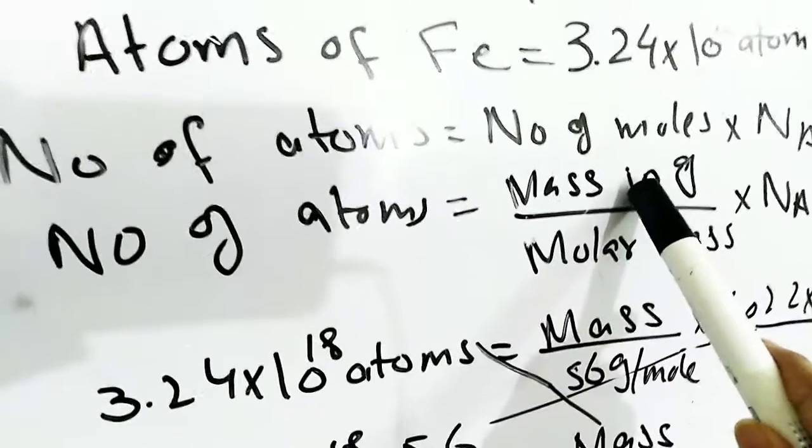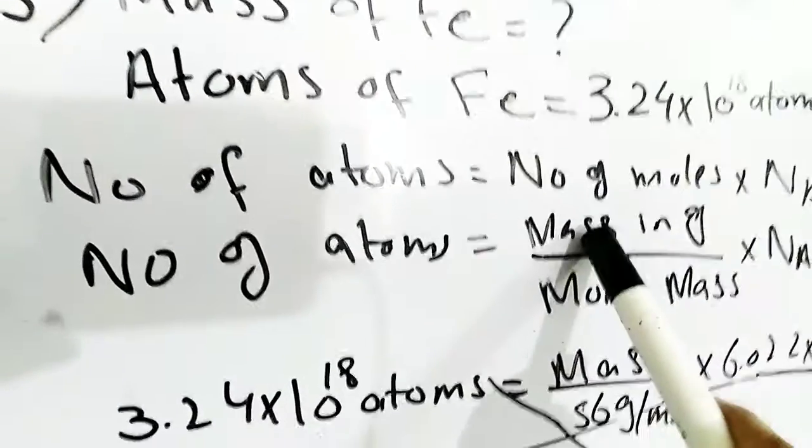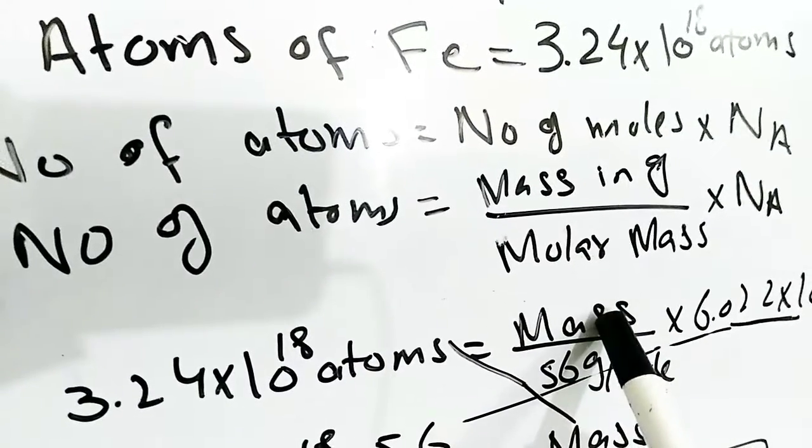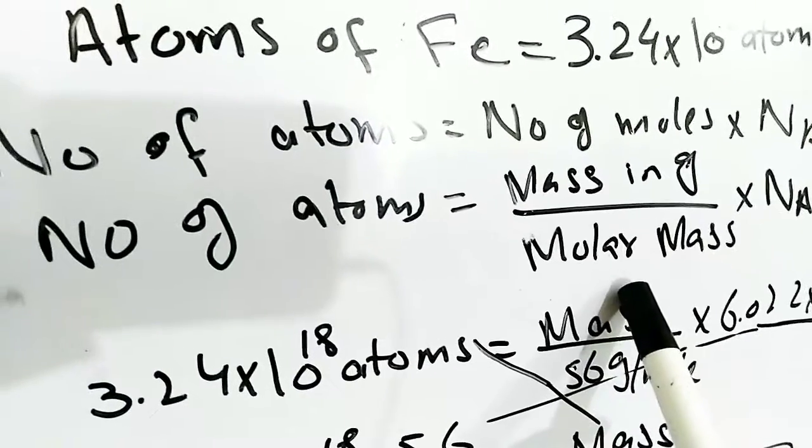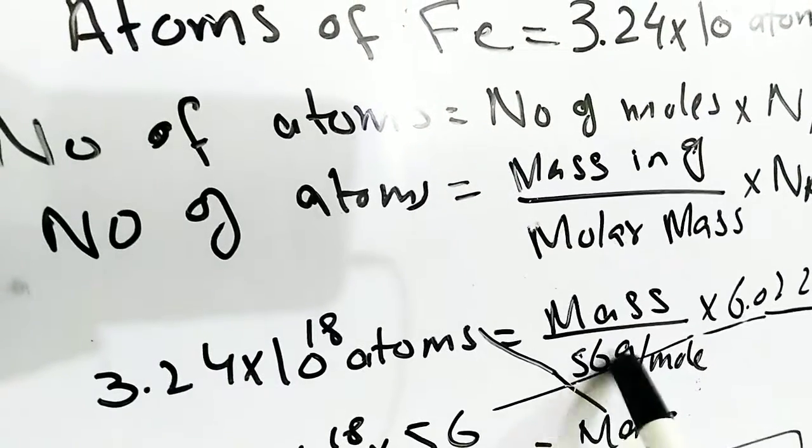Over here we don't have the number of moles. We have to find out the mass of iron. So what we will do is put the formula for number of moles: mass in grams divided by molar mass. Molar mass we will calculate from the periodic table for one mole of iron, and that is equal to 56 grams per mole.